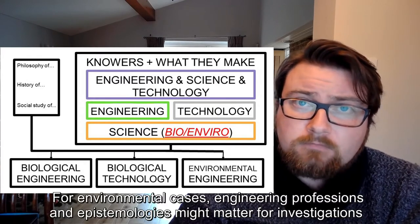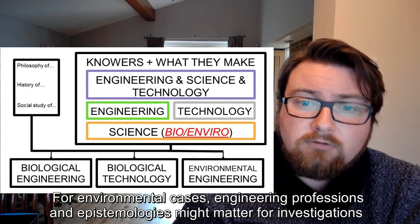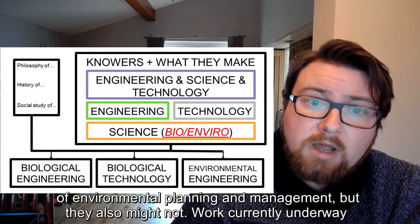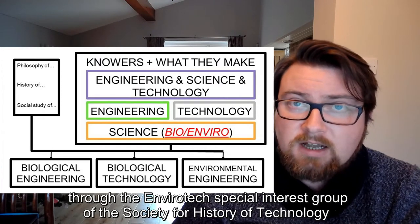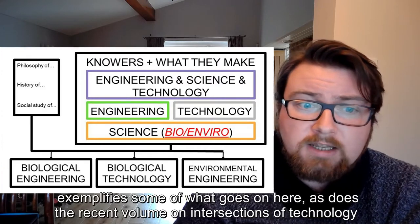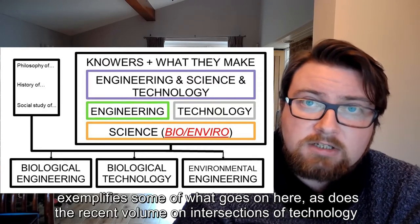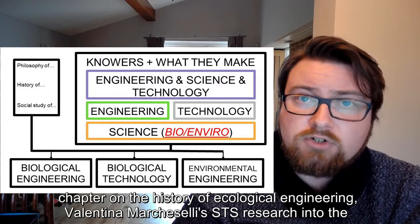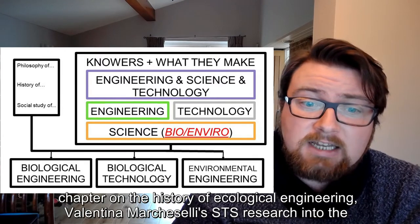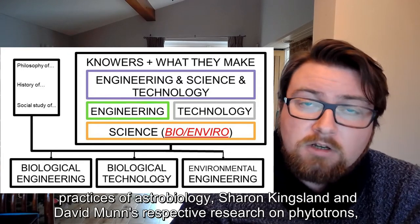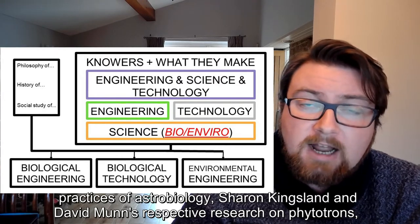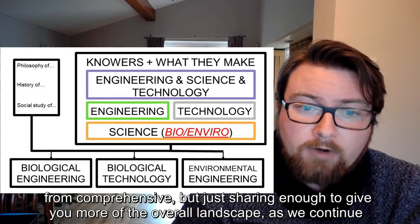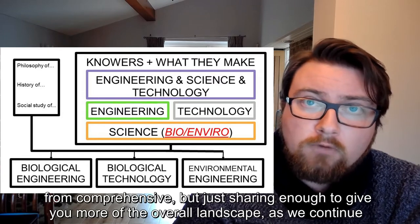For environmental cases, engineering professions and epistemologies might matter for investigations of environmental planning and management, but they also might not. Work currently underway through the Envirotech Special Interest Group of the Society for History of Technology exemplifies some of what goes on here, as does the recent volume on intersections of technology and environment by John Agar and Jacob Ward, also Mike Dietrich and Laura Lovett's short chapter on the history of ecological engineering, Valentina Marcuselli's STS research into the practices of astrobiology, Sharon Kingsland and David Munns' respective research on phytotrons, and Sarah Vaughan's social scientific research on mangrove forest engineering.